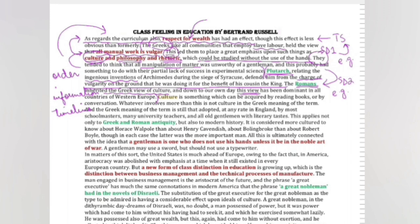Now let's move on. I just told you that every paragraph shares information in a certain order. Culture ki baat hui thi, ab culture ko woh highlight kar hai. Culture is something which can be acquired by reading books or by conversation. Whatever involves more than this is not culture in the Greek meaning of the term. So pehle toh humehi writer nahe bataya ki culture kya hai. Culture is something that can be acquired, aur means kya hai is acquisition ke? By reading books or by conversation.